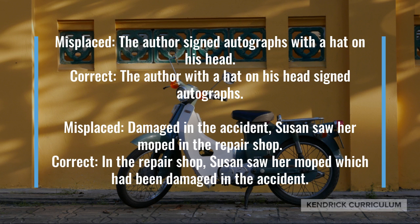The second example contains a participial phrase in the wrong place: 'Damaged in the accident, Susan saw her moped in the repair shop.' It is correctly written: 'In the repair shop, Susan saw her moped, which had been damaged in the accident.'